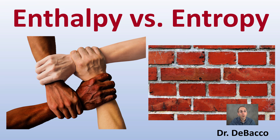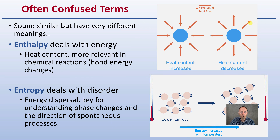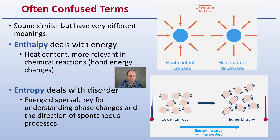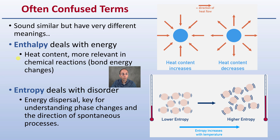Let's get into the comparison between enthalpy and entropy. They sound similar but have very different meanings. Enthalpy deals with energy and heat content, and is more relevant in chemical reactions such as bond changes — we're looking at where that heat energy is going. Entropy deals with disorder and energy dispersal, and is key for understanding phase changes and the direction of spontaneous processes.